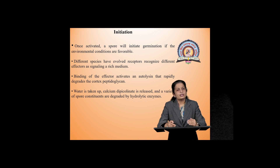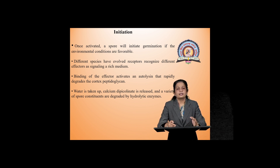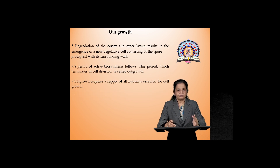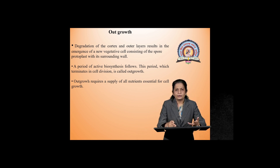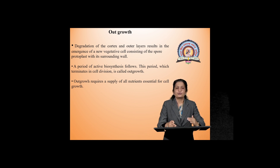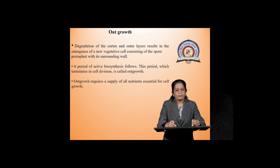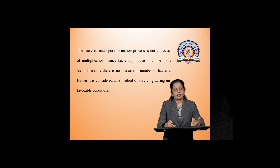Because of the degradation of this cortex layer, water enters inside the cell — the dehydrated spore takes in water. Calcium dipicolinate is released out, and a variety of hydrolytic enzymes from the spore constituents are released. Then outgrowth: degradation of the cortex and outer layer causes the new cell to emerge, consisting of the protoplast with surrounding wall. Active biosynthesis starts because water is now available, nutrients are available, and conditions are favorable. Therefore the cell is no longer dormant and is in an active biosynthetic stage. This period terminates in cell division and outgrowth is formed — for outgrowth, nutrients are obviously required because there is cell growth.